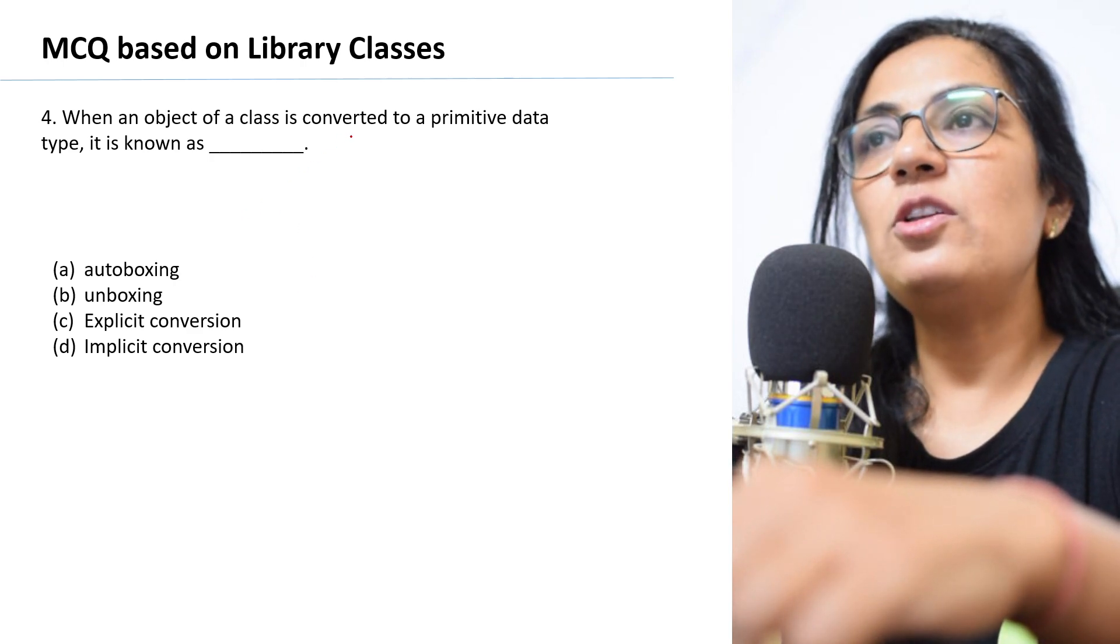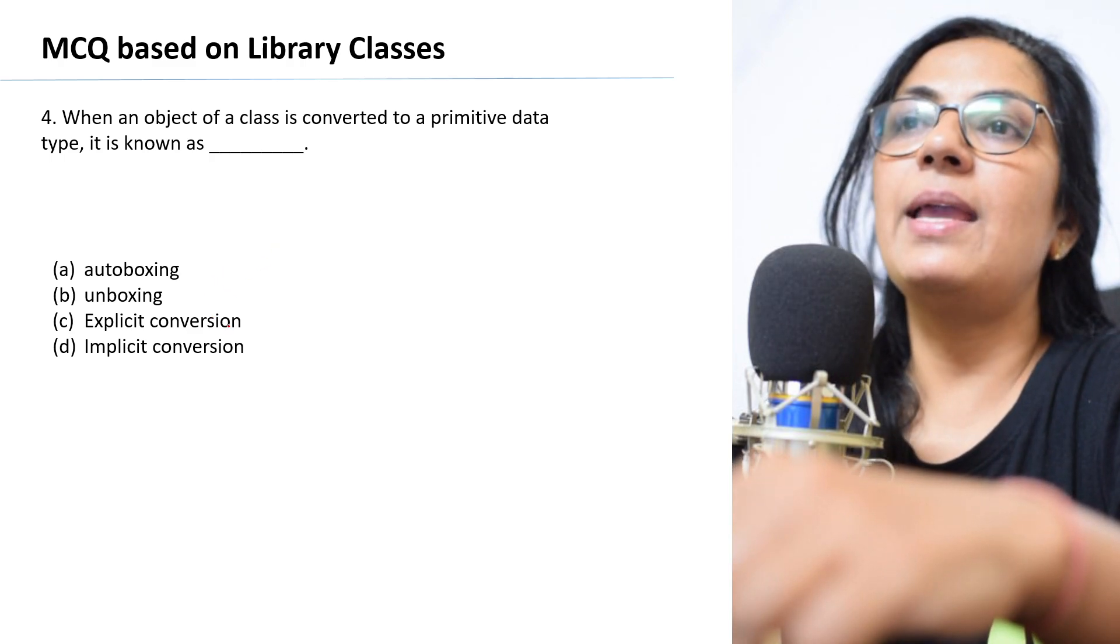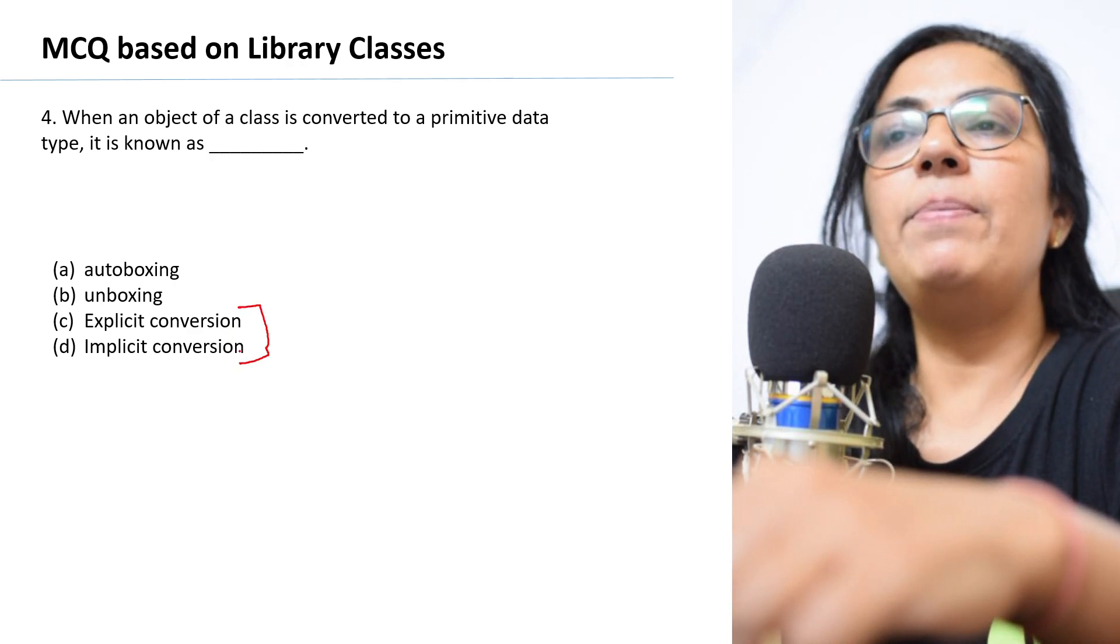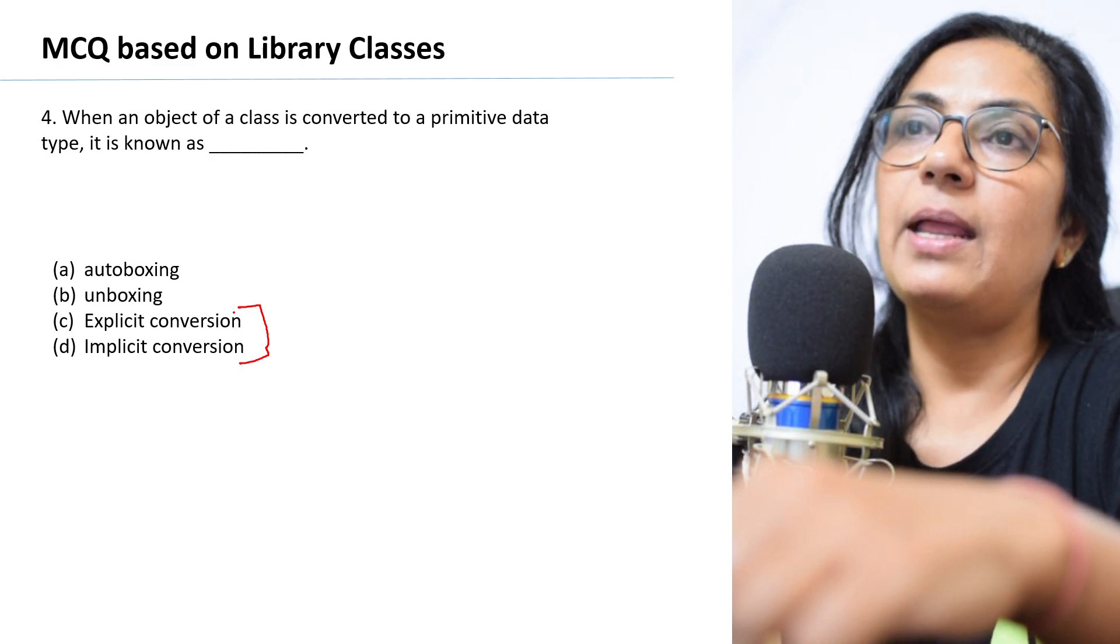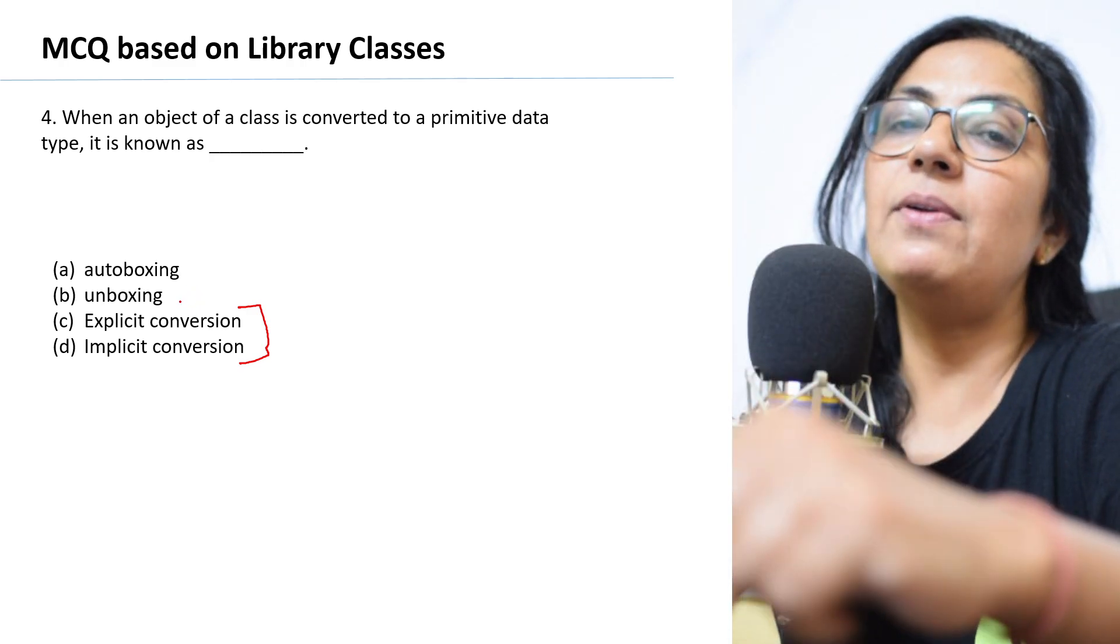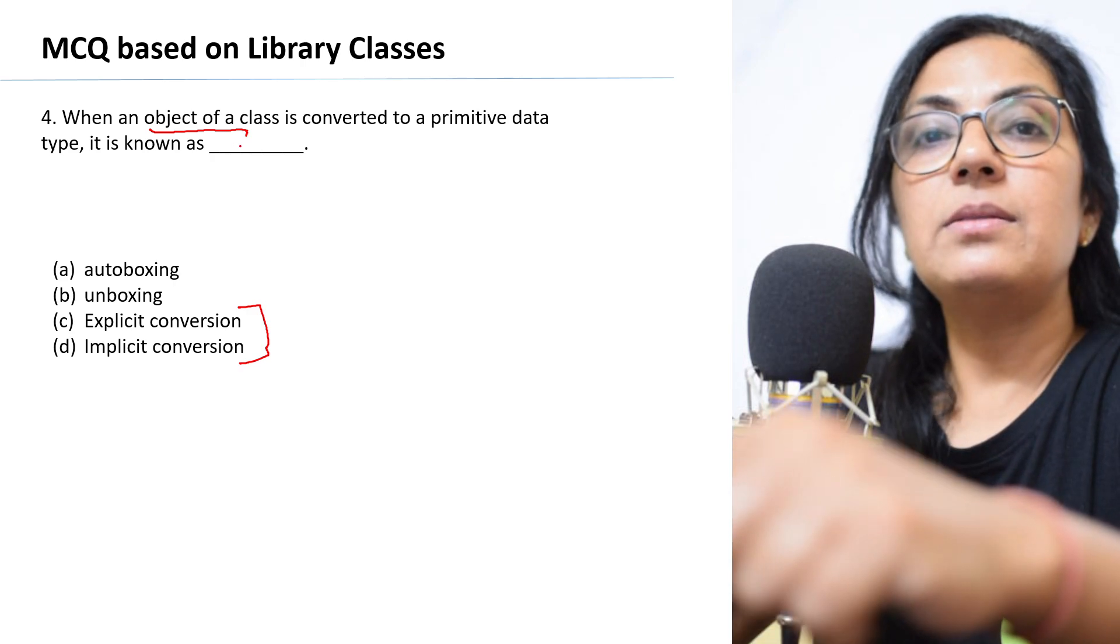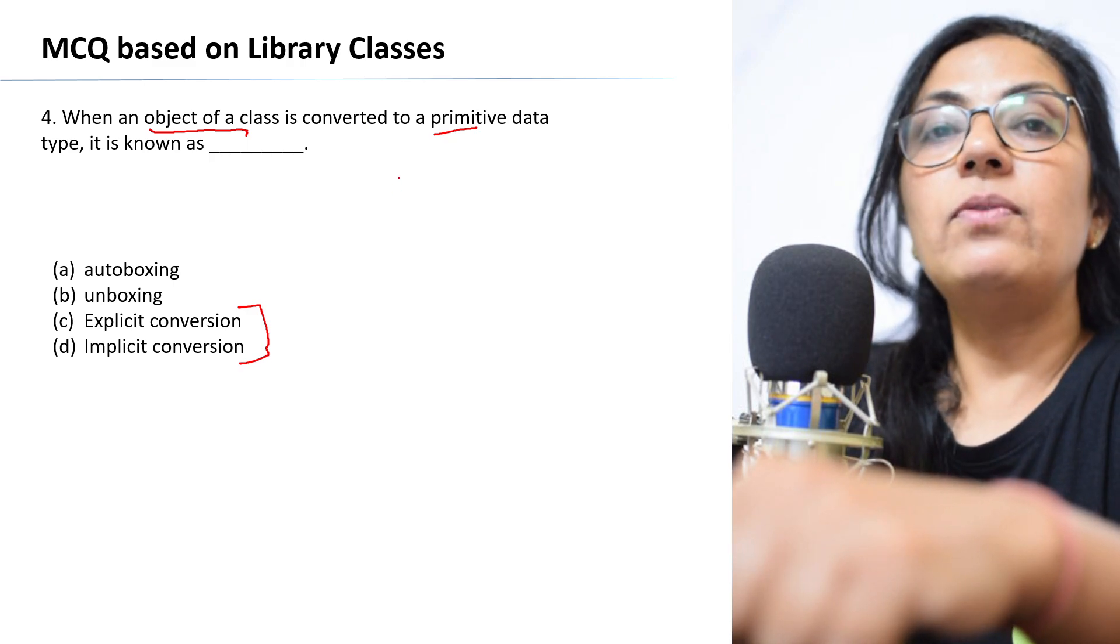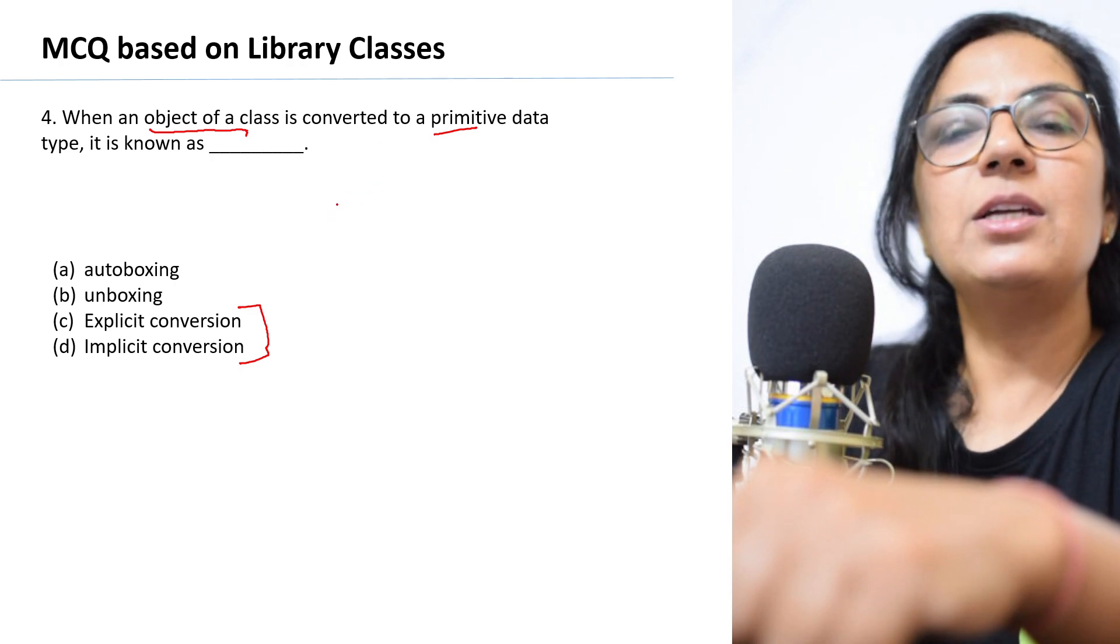We move on to question number four. When an object of a class is converted to a primitive data type, it is known as autoboxing, unboxing, explicit conversion, or implicit conversion. Children, you know explicit and implicit conversions are used to convert one primitive data type to another primitive data type. Autoboxing and unboxing are used for conversion primitive to non-primitive and non-primitive to primitive data type. Here an object of a class is non-primitive data type. We want to convert this to primitive data type. So what will be the correct answer? Autoboxing or unboxing?